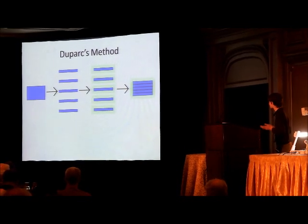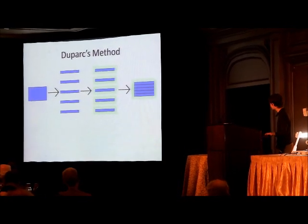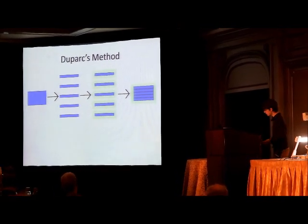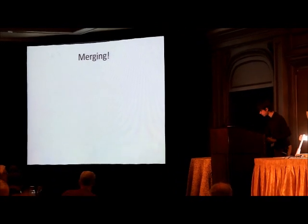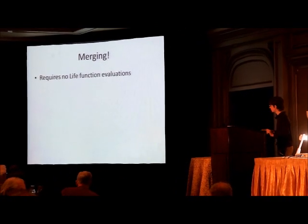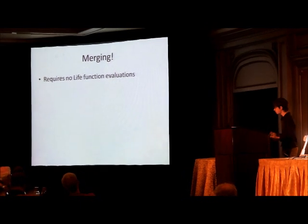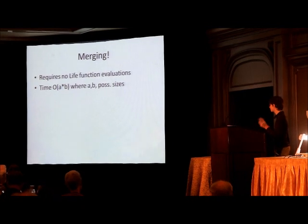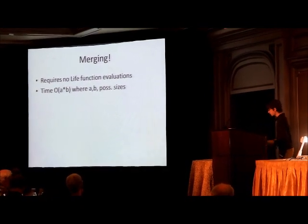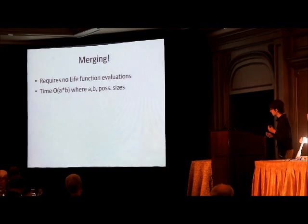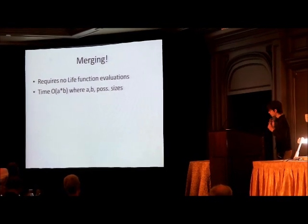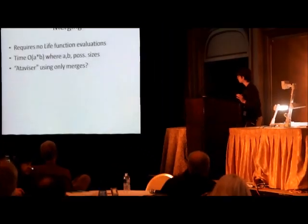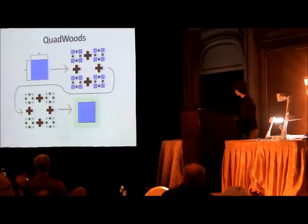This is only good for certain types of patterns. But the merge operation in step three is particularly useful. A few things about merging: it requires no full evaluations, which are actually rather slow. It's fairly fast, as long as you keep the sizes of the sets roughly the same. About two months ago, I was wondering: could you possibly make a predecessor finder using merge-based operations?